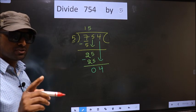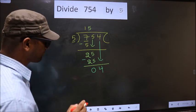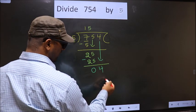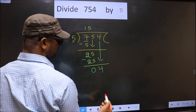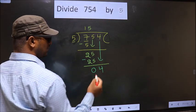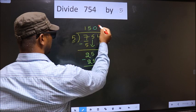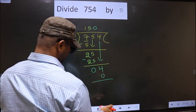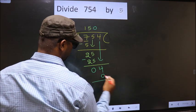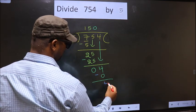Instead what you should think of is what number should we write here. If we write 5 here that is larger than 4. So what we do is we take 0 here. So 5 into 0, 0. Now you subtract 4 minus 0, 4.